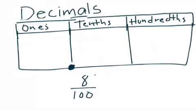So I know that this 8 right here says 8 hundredths. Right? So by saying hundredths, I know that I need to put it in the hundredths place. So I'm going to put my 8 in the hundredths place.